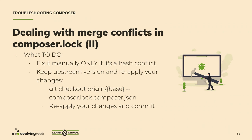For conflicts anywhere else in composer.lock, the recommended approach is to keep the upstream changes and replay your changes on top. Use git checkout origin/main-branch composer.lock composer.json, then re-execute your commands — for example, composer require drupal/devel and composer update drupal/admin_toolbar — and commit the new changes to both files. That's how you fix composer.lock merge conflicts. It's a bit terrifying at first, but you get used to it.